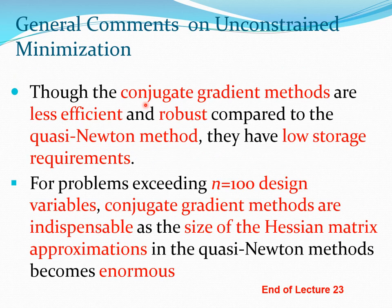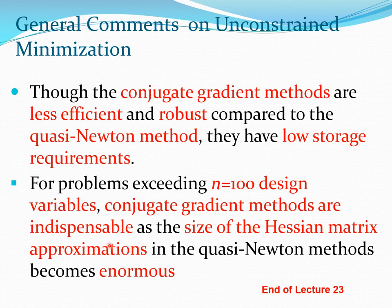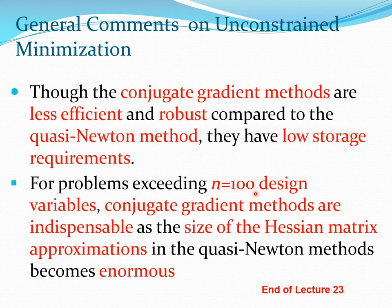Conjugate gradient methods are typically not as efficient and robust as quasi-Newton methods, but their big advantage is low storage requirements — you do not need to carry the n×n matrix approximating H. For problems with a large number of design variables, conjugate gradient methods are indispensable because the H approximation (B or A) becomes huge in quasi-Newton methods. As a guideline: if n is less than about 100, quasi-Newton methods are fine; if n is much larger — thousands or millions — use conjugate gradient.